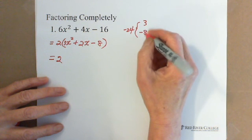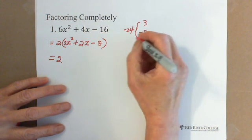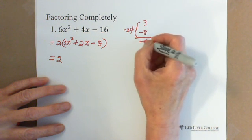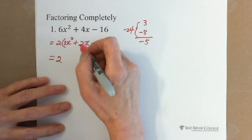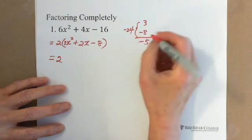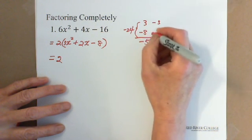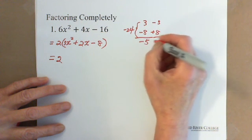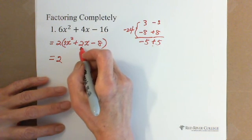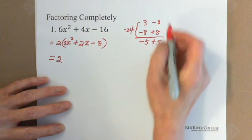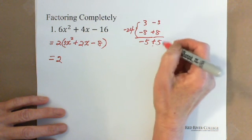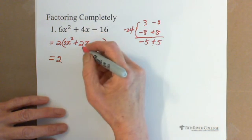We use negative 24 as a reference — we need two numbers that multiply to negative 24 and add to positive 2. We first pay attention to the sign. We need positive 2, but if we try negative 3 and positive 8, their sum gives us positive 5, which doesn't match.